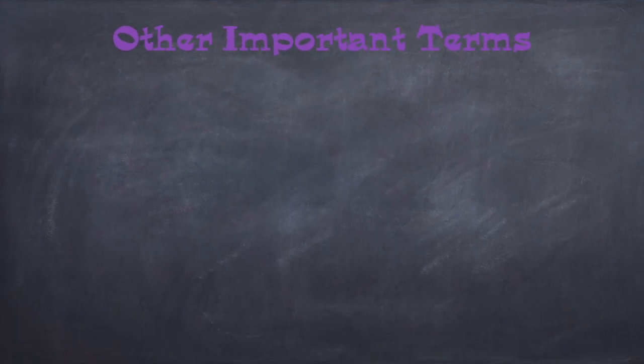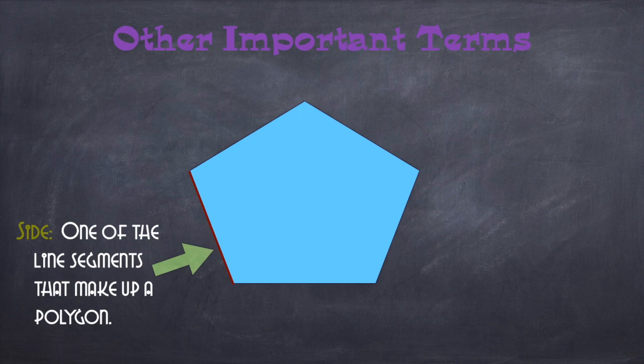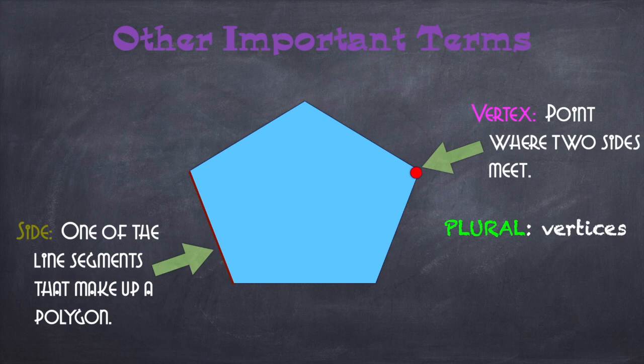Some other very important keywords. Firstly, the side. The side is one of the line segments that make up polygons. This can also be referred to as its edges. The vertex. This is the point where two sides meet on a polygon. The plural of vertex is vertices. The vertex can also be referred to as corners or angles. There are many different types of polygons. Polygons are shapes with three or more sides. Today we are going to focus on the polygons with up to ten sides. Let's take a look.